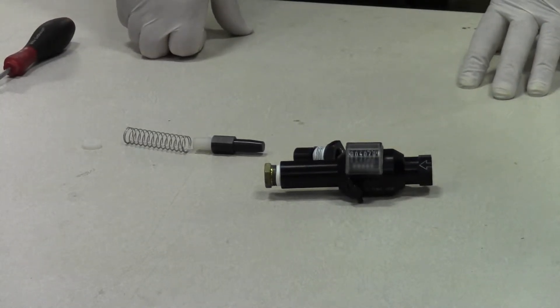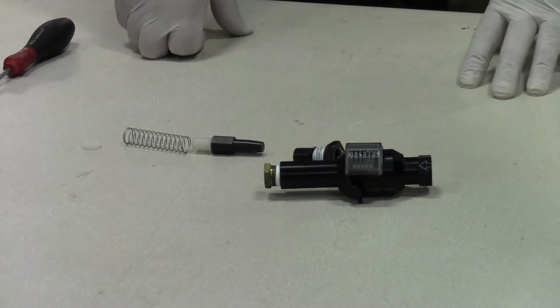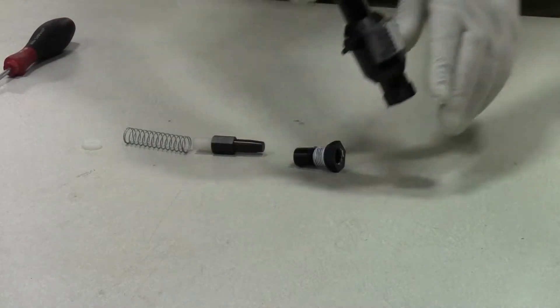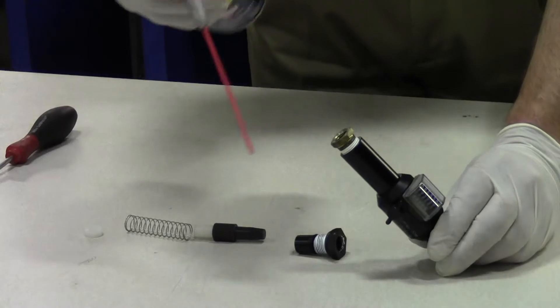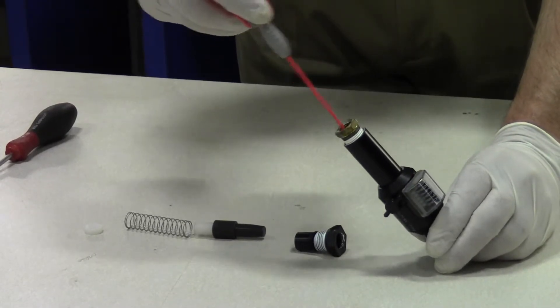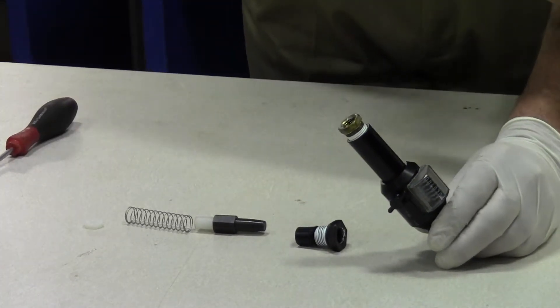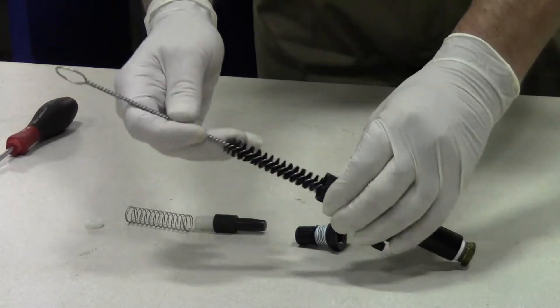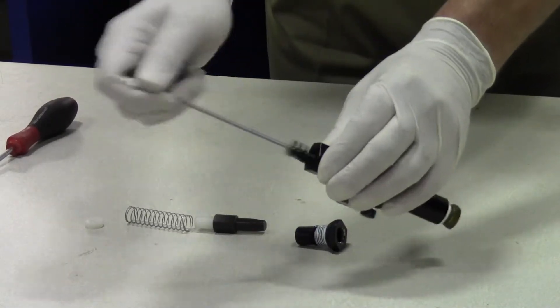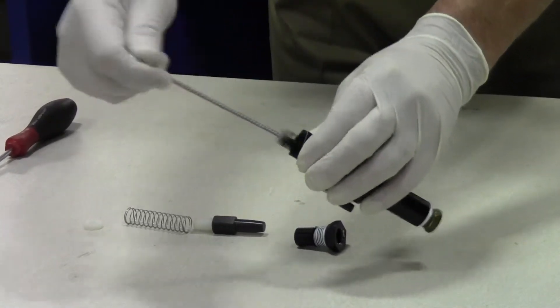Once you have the shuttle, spring, and end cap removed from the inside of the barrel, you can clean the inside of the barrel with a small brush and some WD-40. This will remove any debris or buildup that are on the inside preventing the shuttle from moving freely.